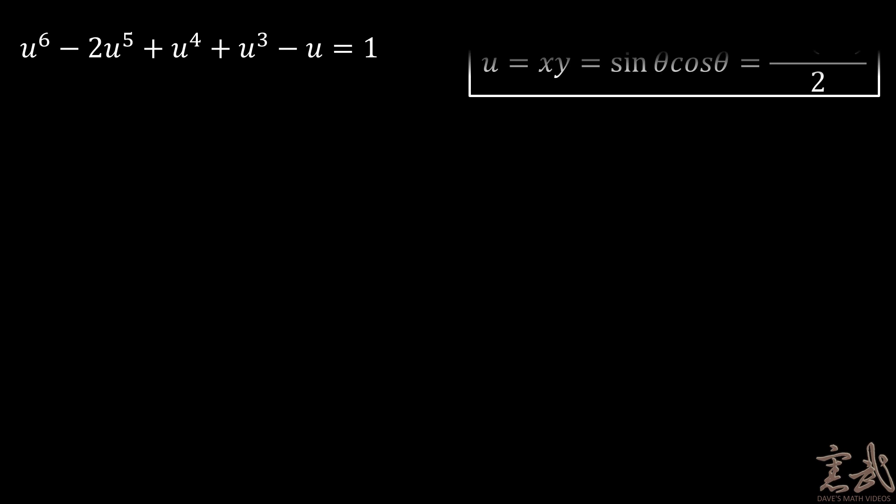We can recall that u was really equal to xy, which was really equal to sine theta cosine theta. Using the double angle formula, we can write this down as sine of 2 theta over 2.